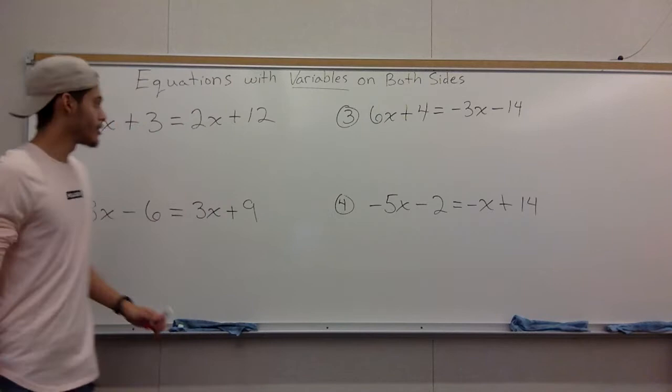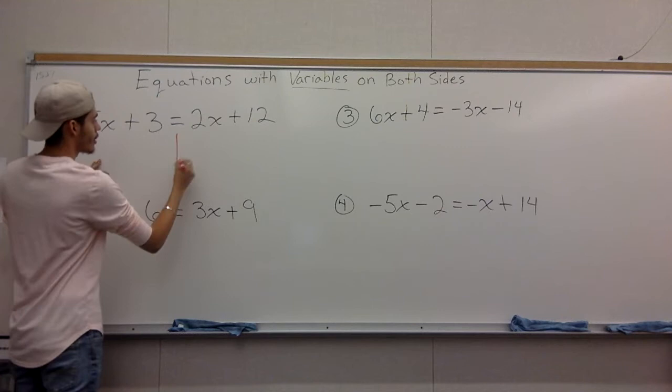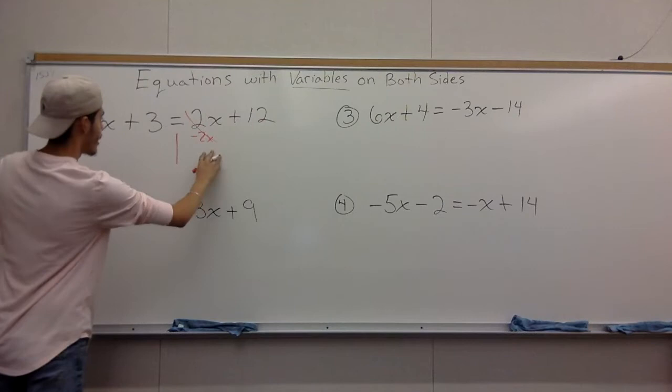Okay, number one. Simple, concept stays the same. Move the x to one side, regular numbers, just push them off to the other side. We're just going to have a two-step equation at the very end. So separate the problem, how we've been doing. We have this 2x, move it to the left.